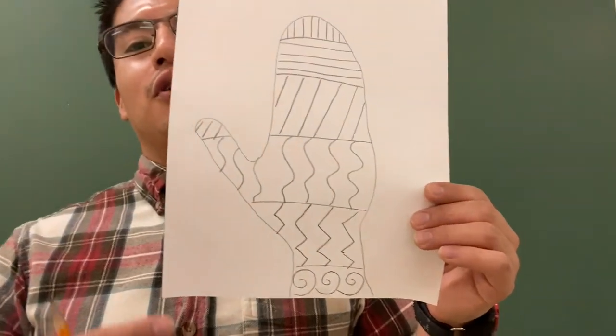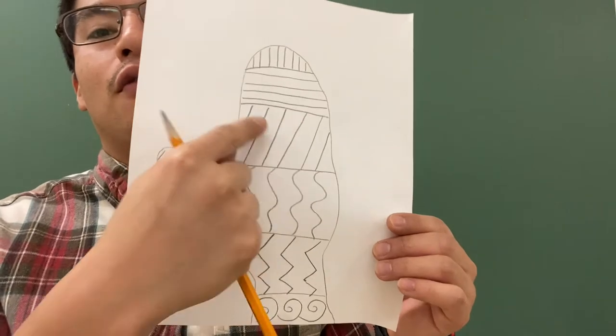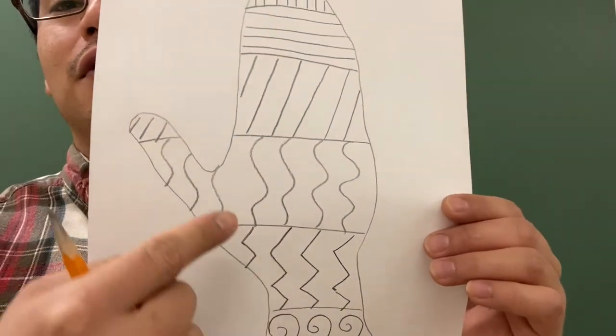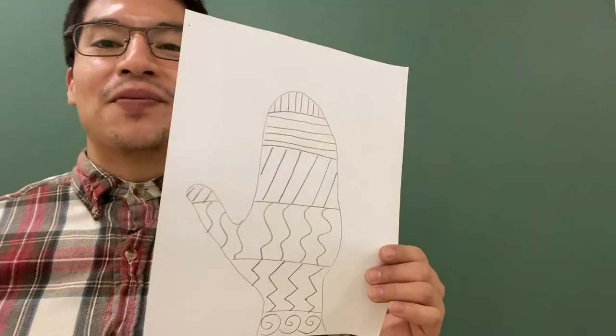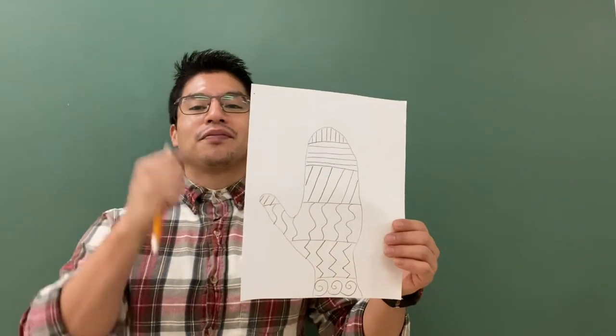So what we're going to do is trace the shape of our hand without tracing all of our fingers, and then we're going to use different kinds of lines to design our winter mitten. All you're going to need for this is a piece of paper and a pencil. Let's get started.